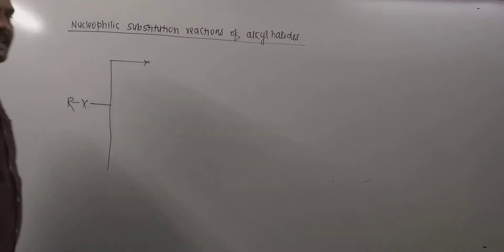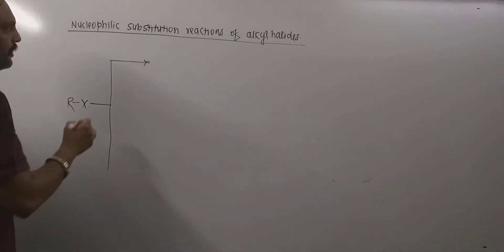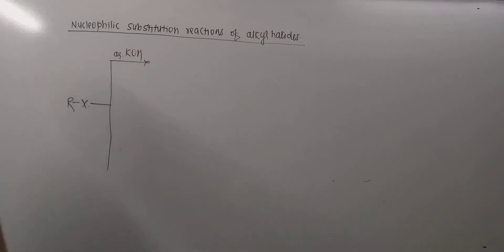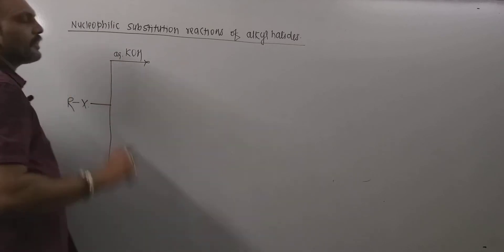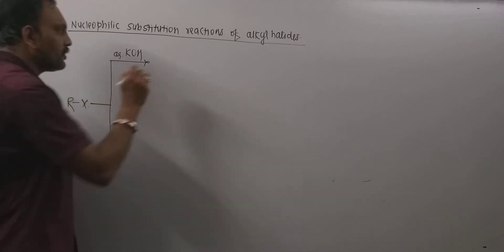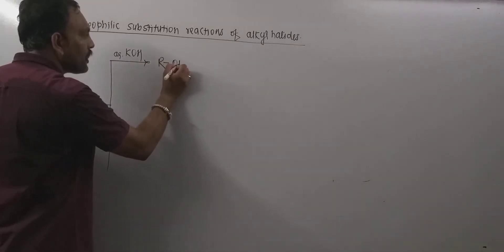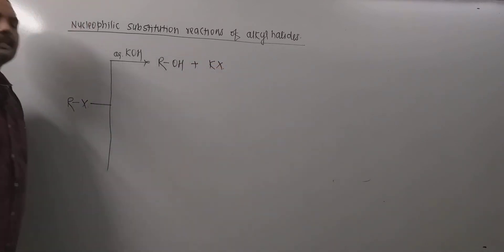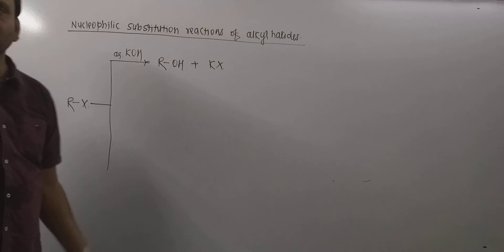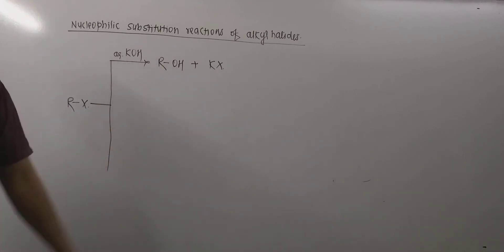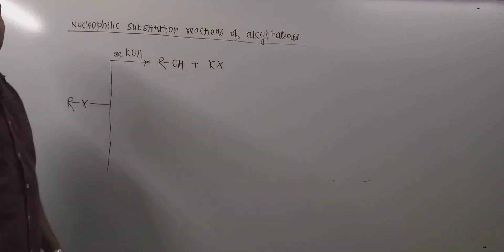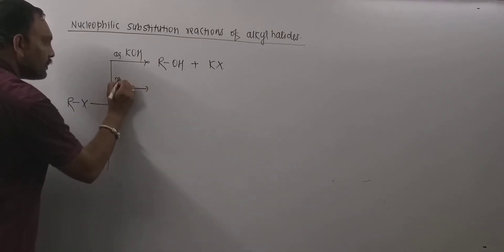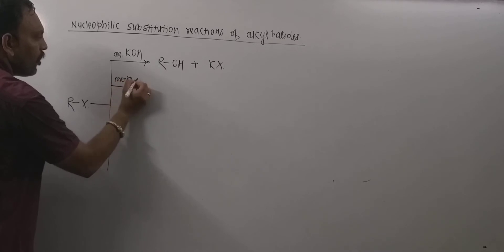The very first nucleophilic substitution to be discussed is the reaction with aqueous alkali, that is NaOH or KOH. When alkyl halides are boiled with aqueous alkalis like NaOH or KOH, then alcohols are obtained along with the potassium halide. If NaOH is chosen, then sodium halide would be the byproduct.